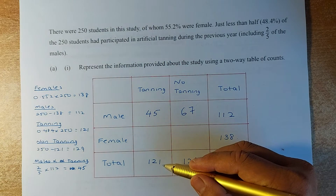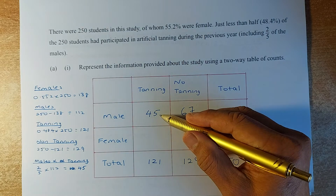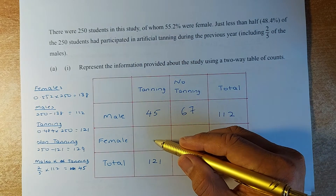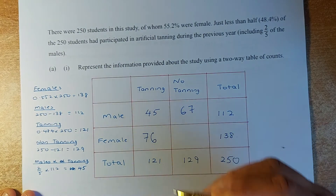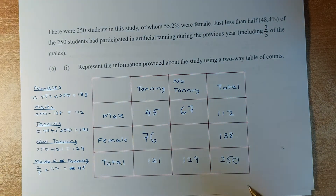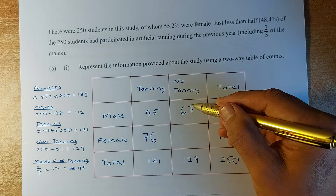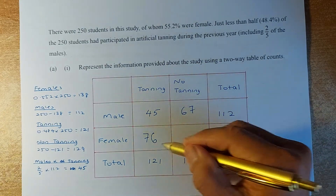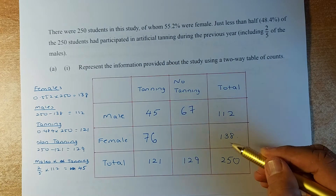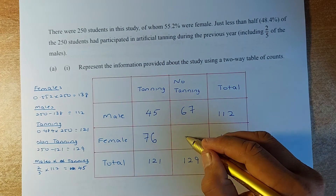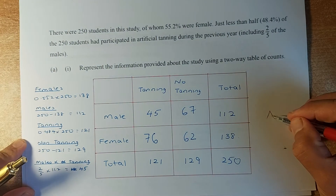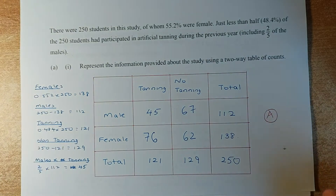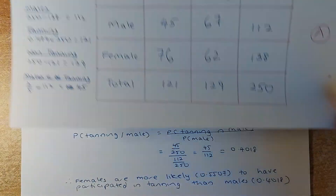Next, total tanning is 121, and male tanning is 45, so to get the number of females who tanned: 121 minus 45 gives you 76. For the last box, to get female non-tanning, you can either add the two row numbers to get 129, or take 138 minus 76 to give you 62. So we do 138 minus 76 equals 62. That is how we fill out the table, and if you can do that, that will give you an achieved.